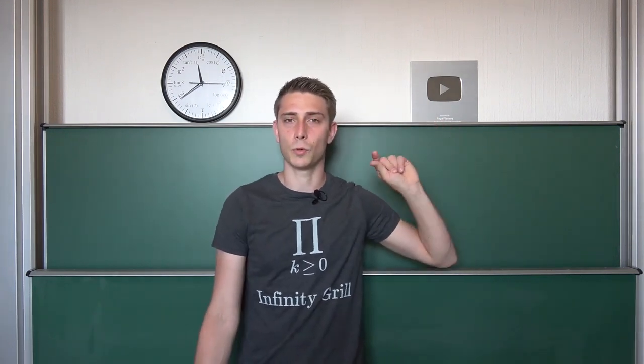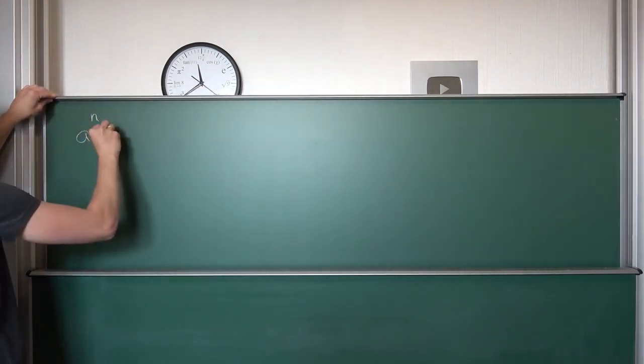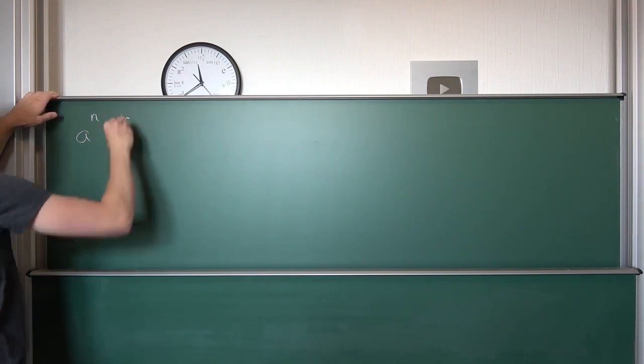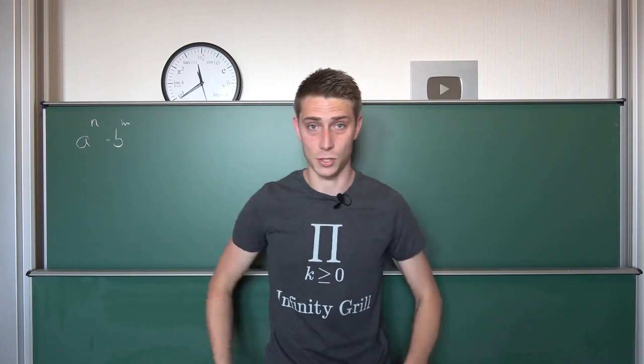This video is a continuation from the one last time, where we talked about multiplications of exponentials of the form a to the nth power times b to the nth power. So multiplying exponentials with different bases and different exponents together.